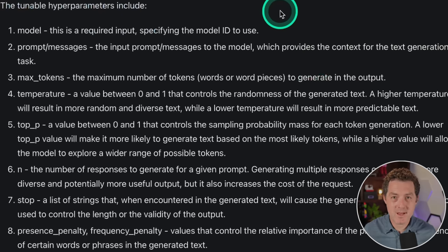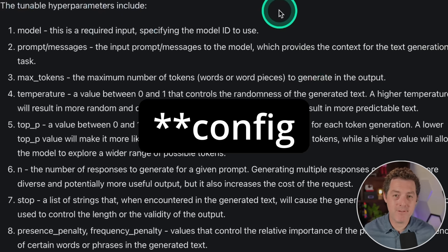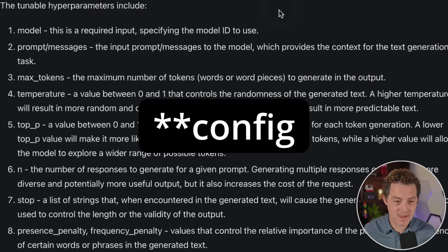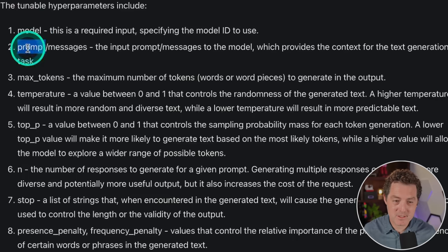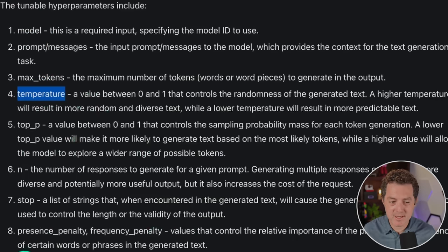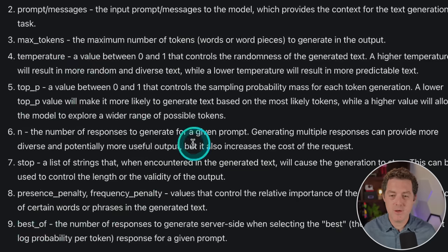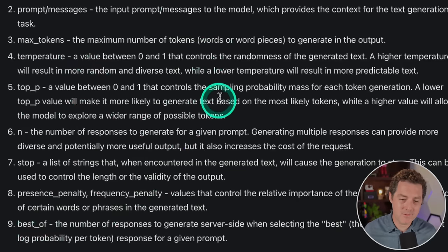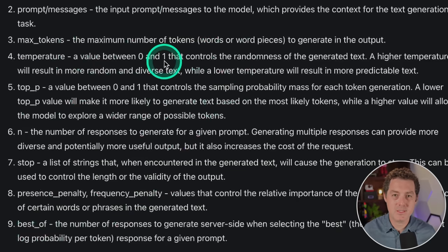You can pass in all the different values you normally can with ChatGPT's API: the model, prompts, messages, max tokens, temperature, top P, stop, presence penalty, frequency penalty, and best of. I'm not going to go over those because they're not really specific to Autogen.